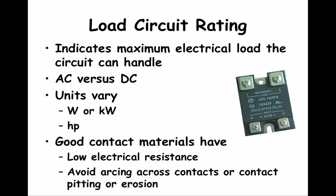The final characteristic is the load circuit rating, which tells you the type and maximum electrical load that the relay can handle. Some relays can only control alternating current devices and others only direct current powered devices. The load side will usually give the maximum kilovolts or horsepower that can be controlled by the relay. Finally, for electromechanical relays, the contact materials need to have low electrical resistance, avoid arcing when disengaged, and should not pit or erode when they open and close.